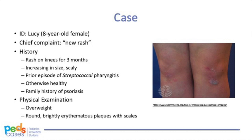She is otherwise very healthy. The mother is quite concerned because the rash has made many kids at school avoid Lucy. On physical examination, Lucy is overweight, and you note round, brightly erythematous, well-demarcated plaques, about five centimeters in width. These plaques are covered with silvery-white scale. The remainder of the dermatological examination is normal. The mother asks you: I have psoriasis and had a similar rash when I was younger. Could this be psoriasis?